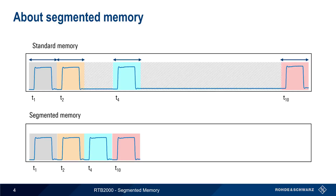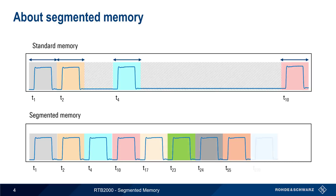The process of acquiring a certain number of samples per trigger and storing them continues until segmented memory is full. Note that the time between triggers can be quite long, making segmented memory very useful for catching rare events, analyzing slow-speed serial protocols, etc.